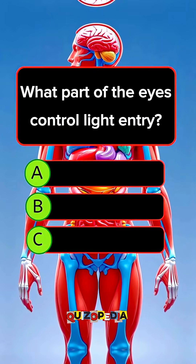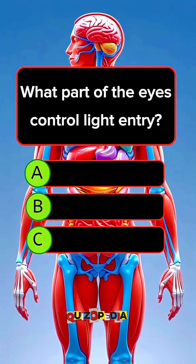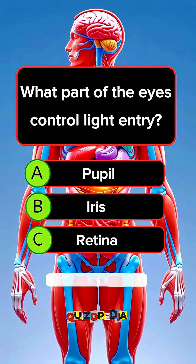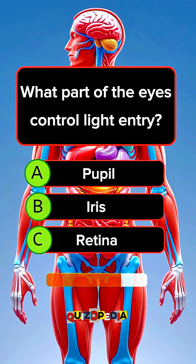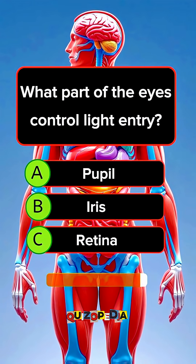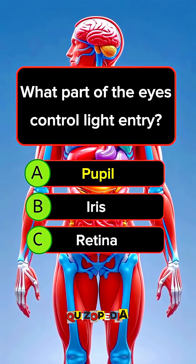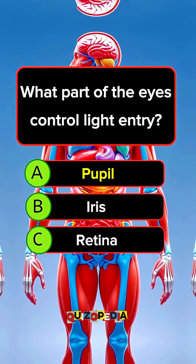What part of the eyes controls light entry? Answer A. Pupil.